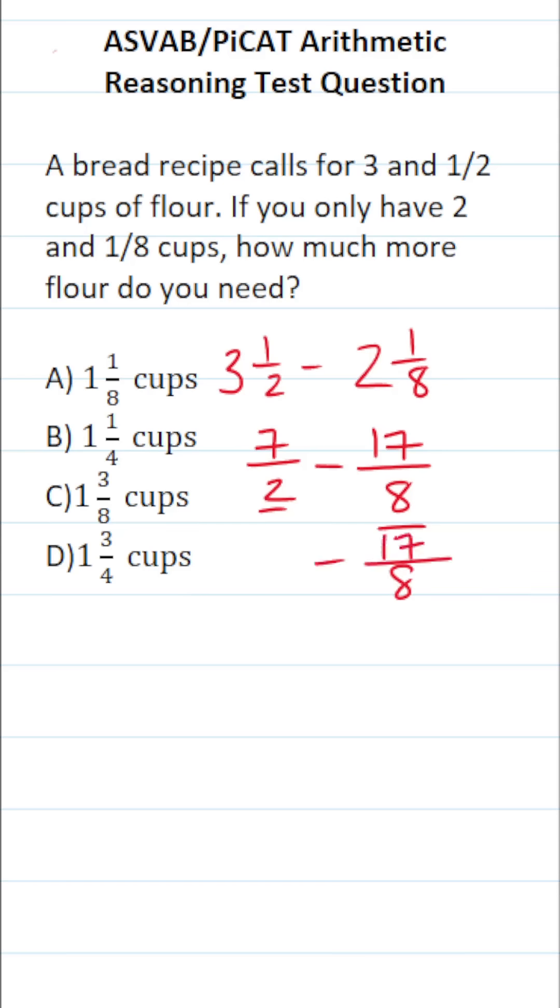And of course, 17 over eight already has a denominator of eight. So we don't have to rewrite it. To write two as eight, we would have to multiply it by four. And we're also going to do that to its numerator. Two times four is eight. Seven times four is 28. So this is 28 over eight minus 17 over eight.